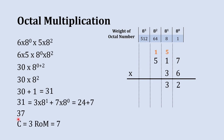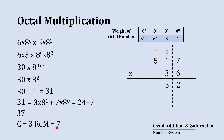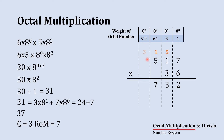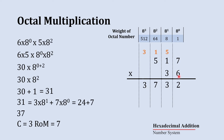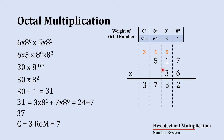Here, 3 will be carry forwarded to the next column and 7 will be the result of our multiplication, written at 8 raise to 2's place. As there are no digits remaining, we directly write the carry 3 here. The multiplication of the first digit of the multiplier with all digits of the multiplicand is complete. Now we jump to the next digit of the multiplier and multiply it with all the digits of the multiplicand.